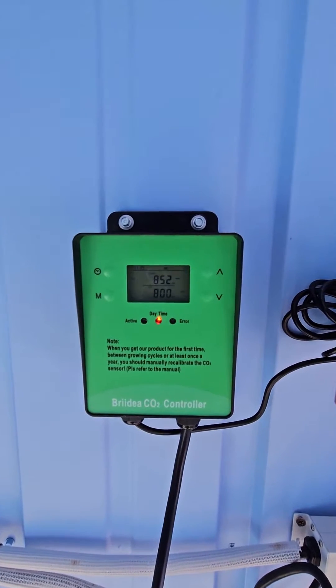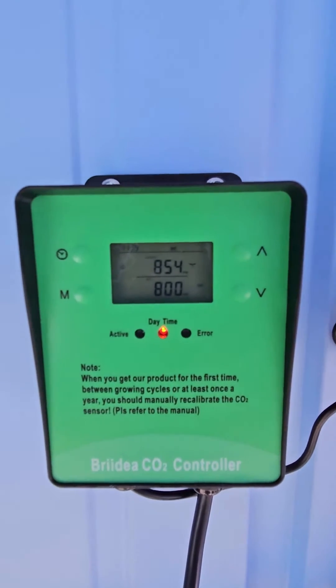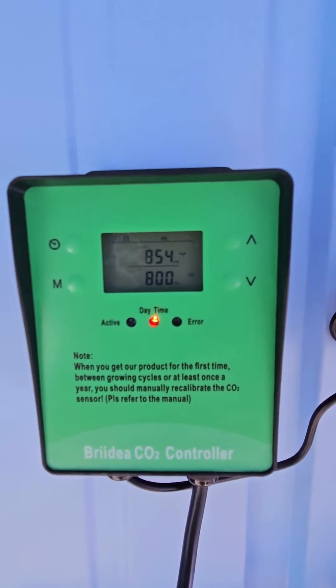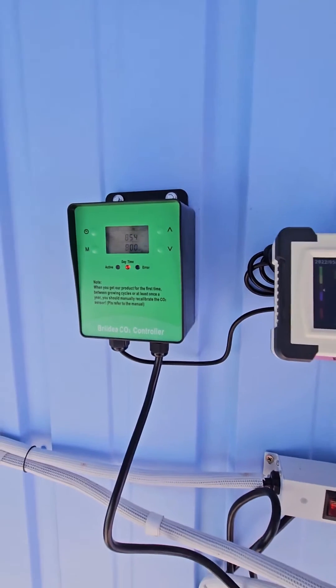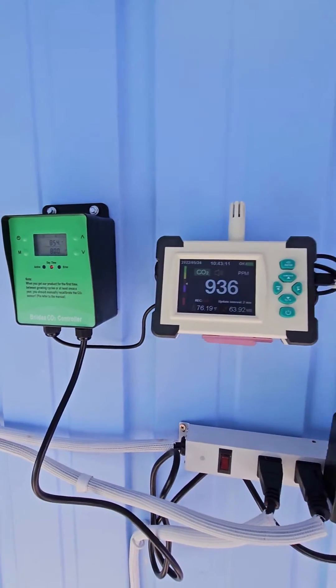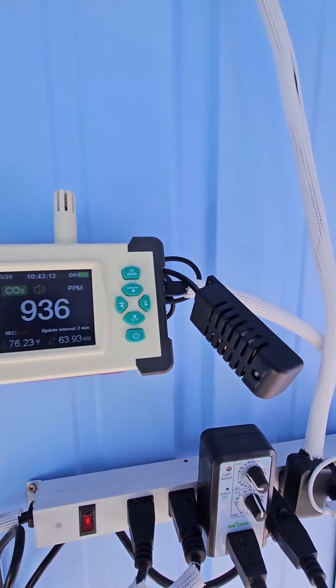So this is the controller - this is what's telling my regulator to turn on and off based on parts per million. Right now just to get things calibrated, I've got it set to 800 PPM and then it's got a 50 PPM dead band, meaning it can swing 50 parts per million before it'll start activating again. That just keeps it from cycling.